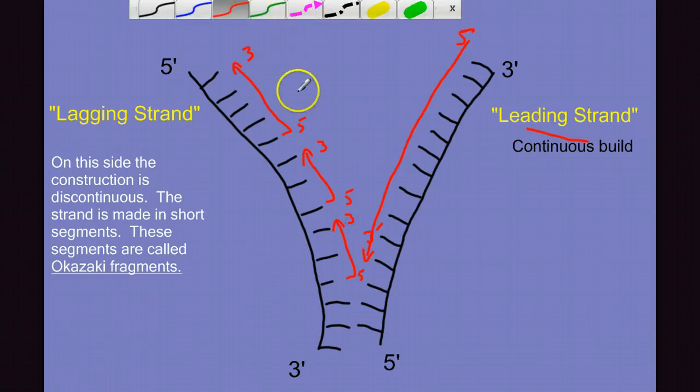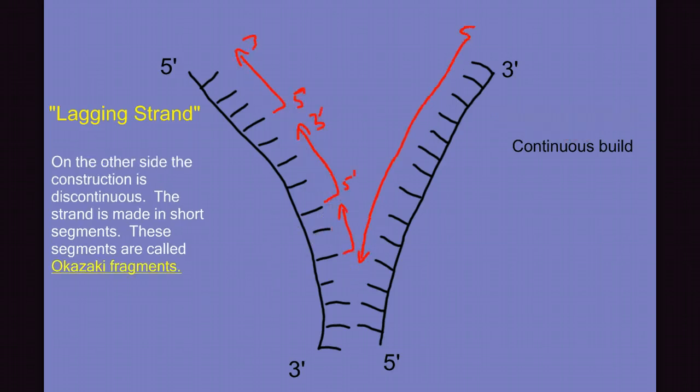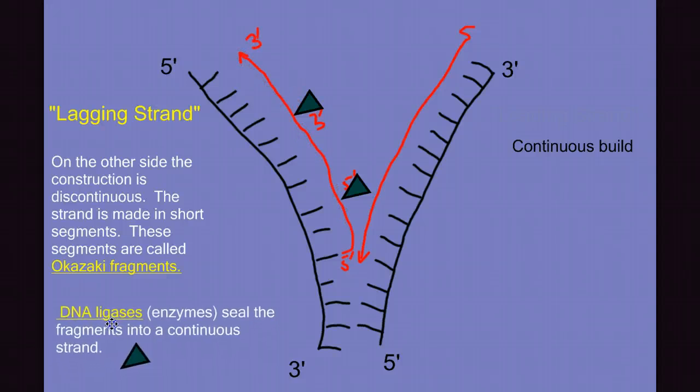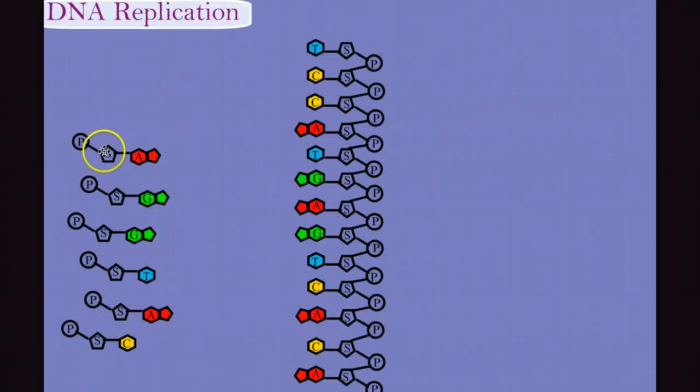You can also see that there are gaps between these fragments that we need to fill here and here. The enzyme that ties the Okazaki fragments together is called DNA ligase. To ligate means to tie together. And that's what these enzymes do. They fill in these gaps between the Okazaki fragments, attaching the sugar to phosphate backbone into a continuous strand. Now there's one more thing we need to know about this process. It turns out that it doesn't work quite like I've shown you.